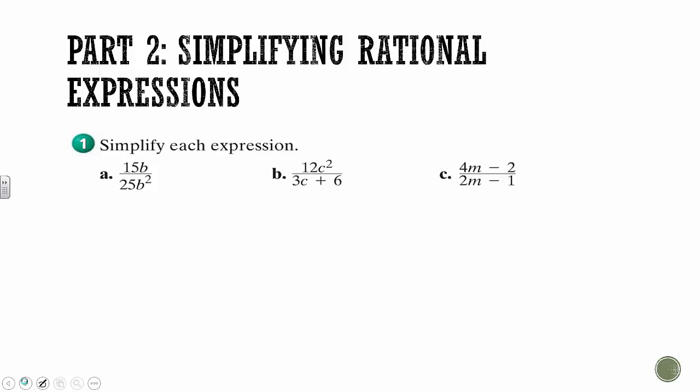So when you have something like this first one, you're going to take a look at what's on the top and what's on the bottom. And if you need to, you can break it down into its factors. So a number like 15 is really 3 times 5, and then we have a b up there. And then on the bottom, we have 25, which is 5 times 5, and b squared means b times b. And since we want to simplify, we want to get rid of anything that they have in common. So both of them have a 5 there, that becomes 1, and both of them have a b. So this simplifies to, the only thing left on top is a 3, and on the bottom, we have 5b.